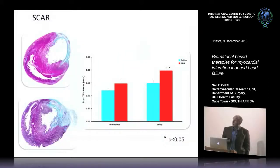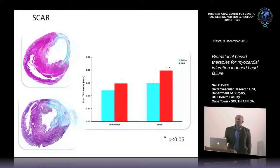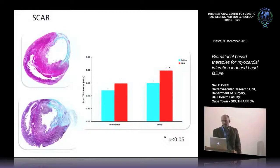When we looked at fractional shortening by echocardiography, if we injected immediately there was no improvement between control and PEG gel. If we injected in a delayed fashion, we saw quite a large, statistically significant improvement against all groups. When we injected immediately, there was effectively no preservation of wall thickness at four weeks — it had thinned. But injecting after one week, we saw preservation of wall thickness.